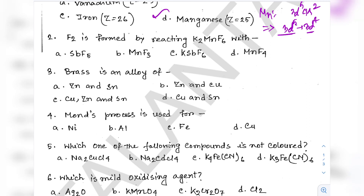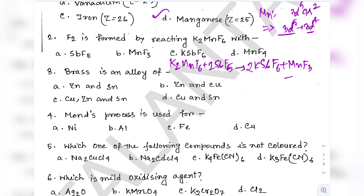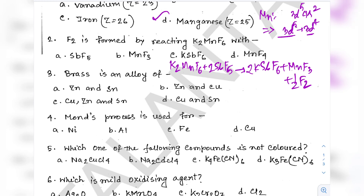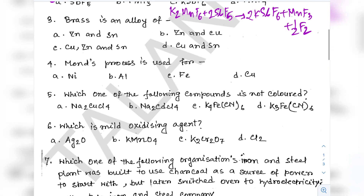Question 2: Fluorine is formed by reacting K2MnF6 with what? This is a very common reaction mentioned in NCERT. K2MnF6 reacts with 2 SbF5 to produce 2 KSbF6 plus MnF3 plus half F2. So SbF5 is the answer — option A is correct.